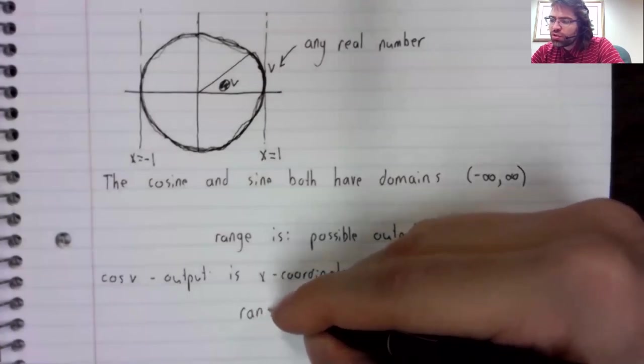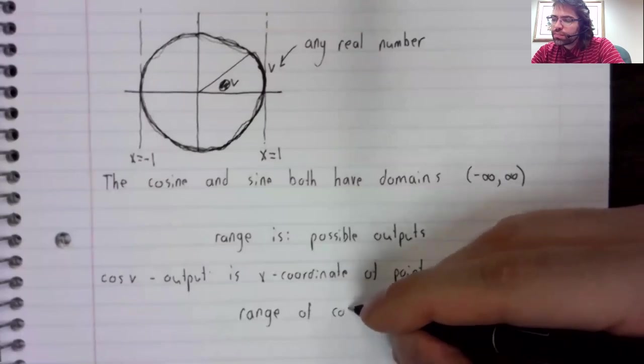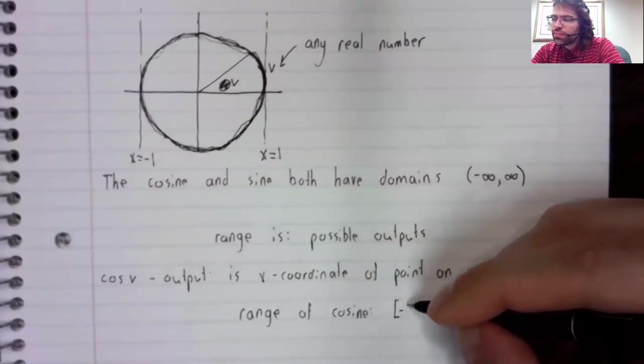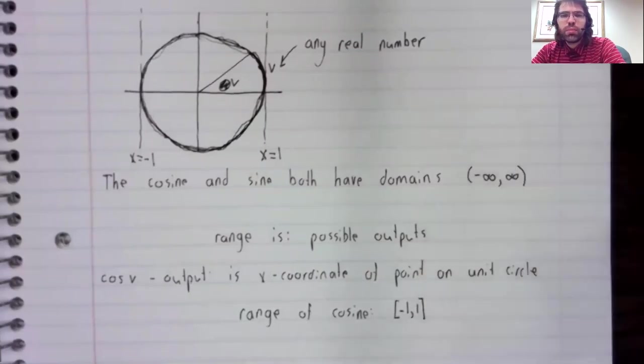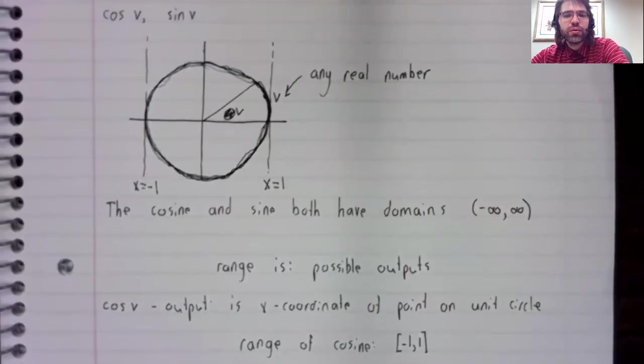So that tells us that the range of the cosine is all of the numbers between negative 1 and 1.